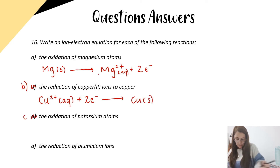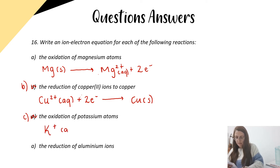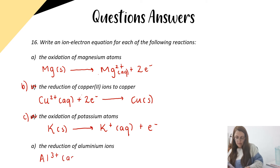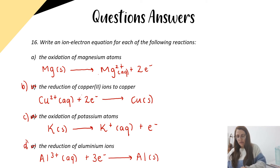For C, the oxidation of potassium atoms: K solid is oxidised to K⁺ aqueous, plus an electron. And lastly, D: the reduction of aluminium ions. Aluminium three plus, looking it up in the data booklet, plus three electrons because it's being reduced, to give aluminium solid. So one mark for each of those if you've got them correct.